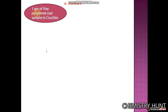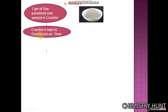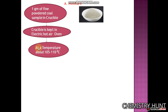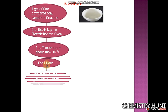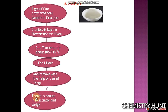For moisture, take one gram of fine powdered coal sample in a crucible. Here is a picture of a crucible — we are going to take one gram of coal sample in it. After that, the crucible is kept in an electric hot air oven where the temperature is about 105 to 110 degrees Celsius. This crucible is kept there for one hour and then removed with the help of a pair of tongs.